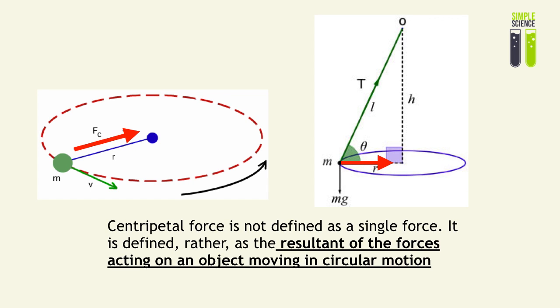The centripetal force is usually not defined as a single force. However, on the left example, it can be seen as a single force because the tension in the string which provides centripetal force is the resultant force acting on the object. However, in the right diagram, the resultant force is of the tension and of the weight which acts towards the center, and that resultant force is the centripetal force. So centripetal force is not necessarily a single force; it is the resultant of the forces acting on an object that is moving in circular motion.